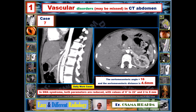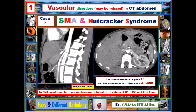When the compression between the SMA and aorta affects both the left renal vein and the third part of the duodenum, both nutcracker syndrome and SMA syndrome can be present in the same patient. In this case, the aortomesenteric angle is 16 degrees and the aortomesenteric distance is 4.6 mm — both below normal levels. According to the literature, SMA syndrome diagnosis requires an angle below 6 degrees and a distance below 2 mm, so this case demonstrates combined SMA and nutcracker syndrome.